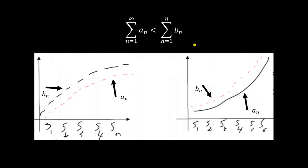Now let's look at the direct comparison test. If we have two series, a and b, where the a series is always smaller than the b series, we can make two conclusions: if b converges, then a converges as well; if a diverges, then b diverges as well. The best way to explain this is with graphs — we have the value of the sum on the y-axis and the number of terms on the x-axis. Since a is smaller, it's always going to be under b. So if we know that the series on top converges, then clearly the series on the bottom must converge too. On the other hand, if we know that the series on the bottom diverges, then we can also say the series on top diverges, because it's always going to be bigger than the one on the bottom.